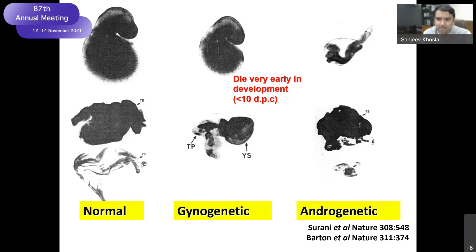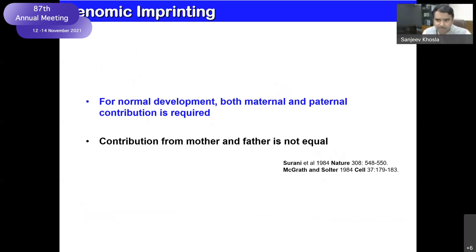This brought out two important facts for mammals — these experiments were done in mice. For normal development, you require contributions from both the maternal and paternal side. But most importantly, it showed that the progeny is recognizing the contributions from mother and father as not equal, even though the genetic information was the same — they were using isogenic lines — yet development was not happening.